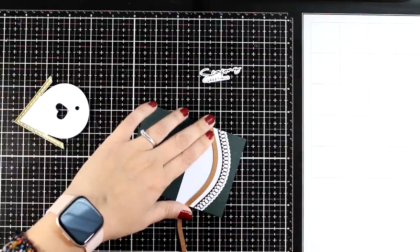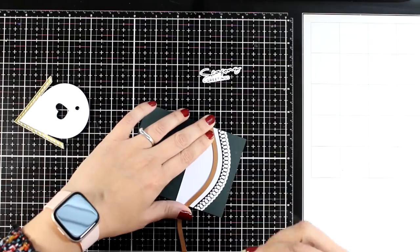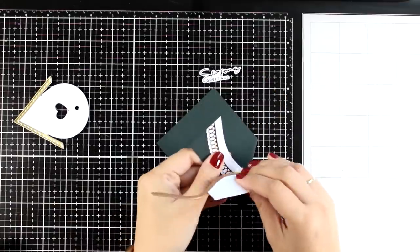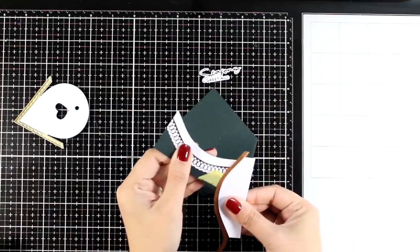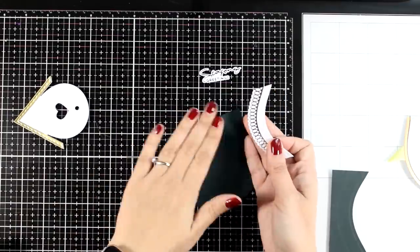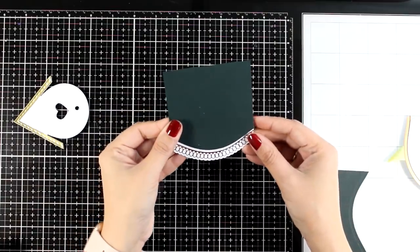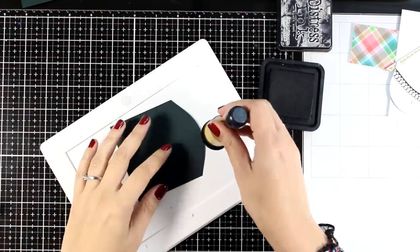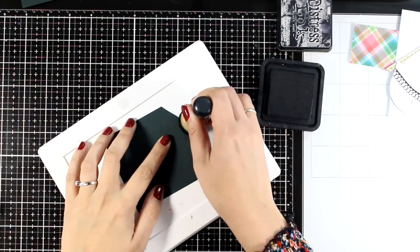I'm using the die from the foiling kit and I'm going to cut out both the green cardstock as well as the decorative edge. Now I know that this white piece is going to fit lovely underneath, it's going to give some contrast. And to enhance that contrast even more I brought in my black soot distress ink and I'm inking up the edges.